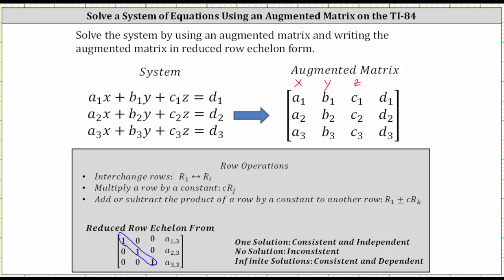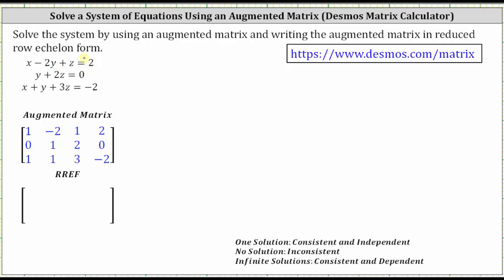So going back to our system, let's first highlight the coefficients of the variable terms. In the first equation, we have one x minus two y plus one z equals two. Notice in the second equation there is no x term — if it's helpful, we can write this as zero x plus one y plus two z equals zero. So the first equation gives us the first row in the augmented matrix, which is one, negative two, one, two.